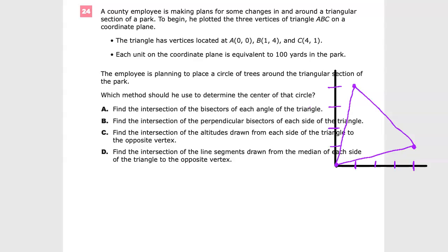A county employee is making plans for some changes in and around a triangular section of the park. To begin, he plotted the three vertices of triangle ABC on a coordinate plane. The triangle has vertices located at 0,0, 1,4, and 4,1. So I did that here. This is A, this is B. No, sorry, this is C, and this is B.